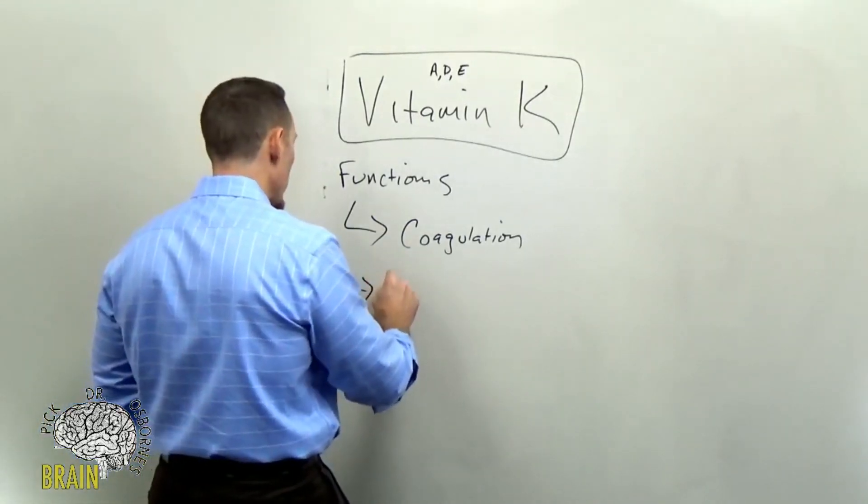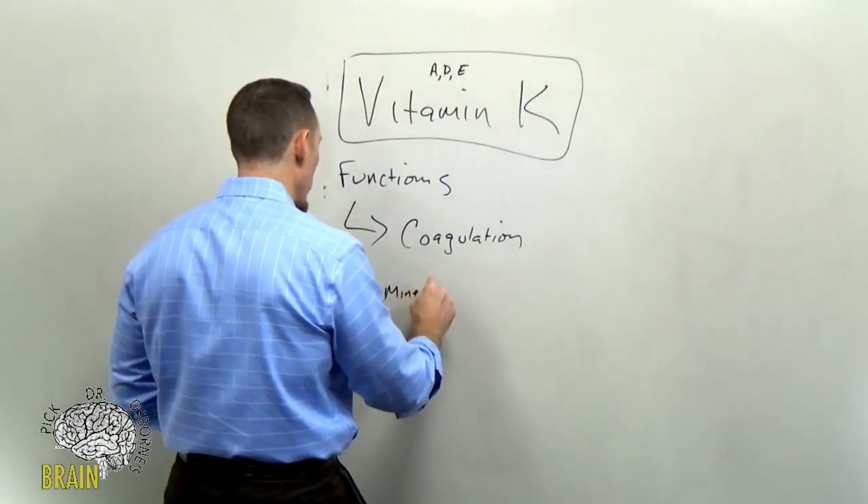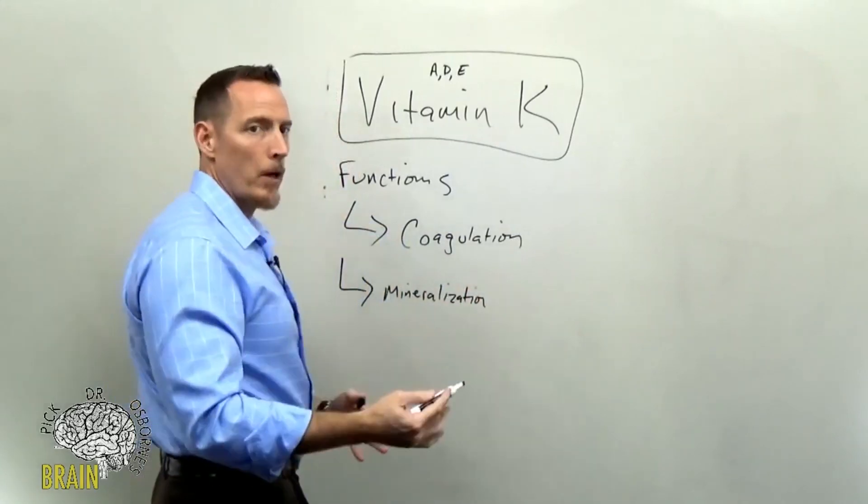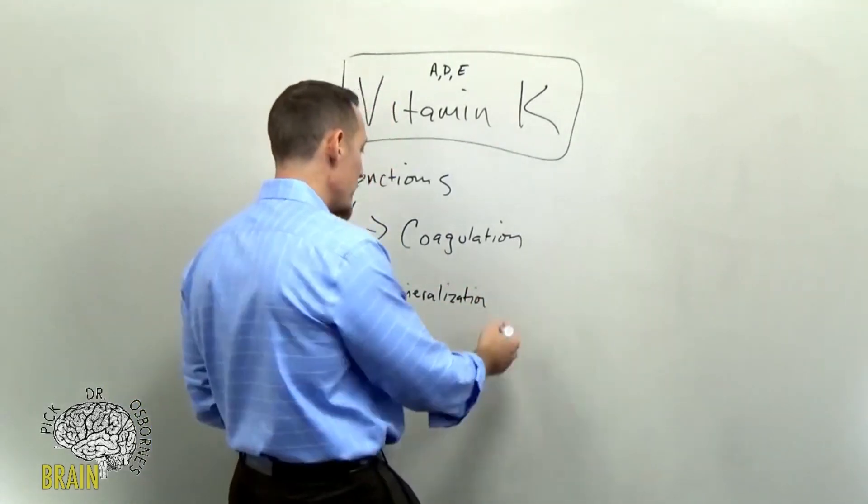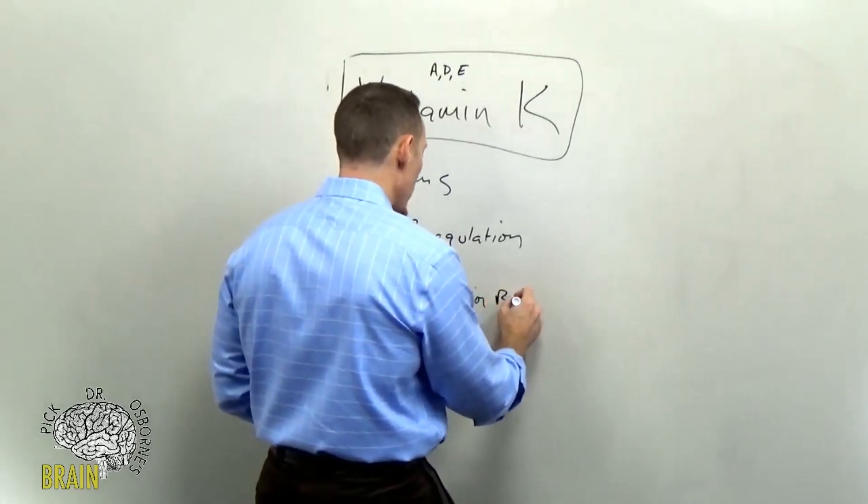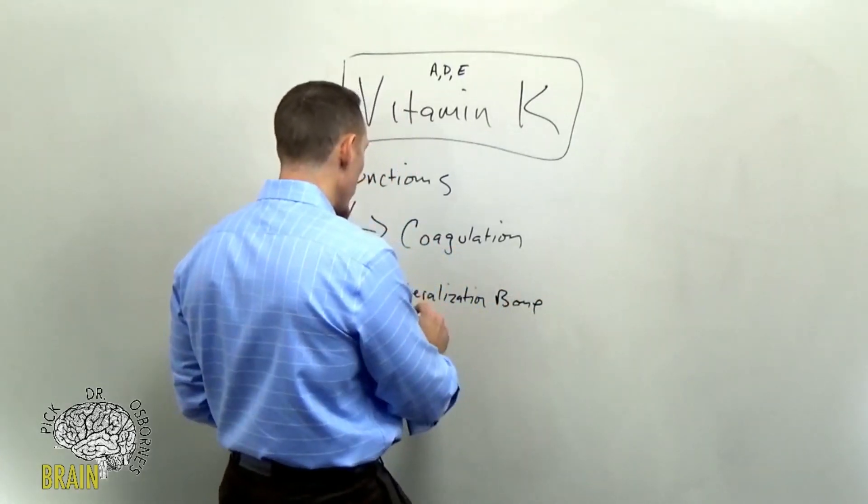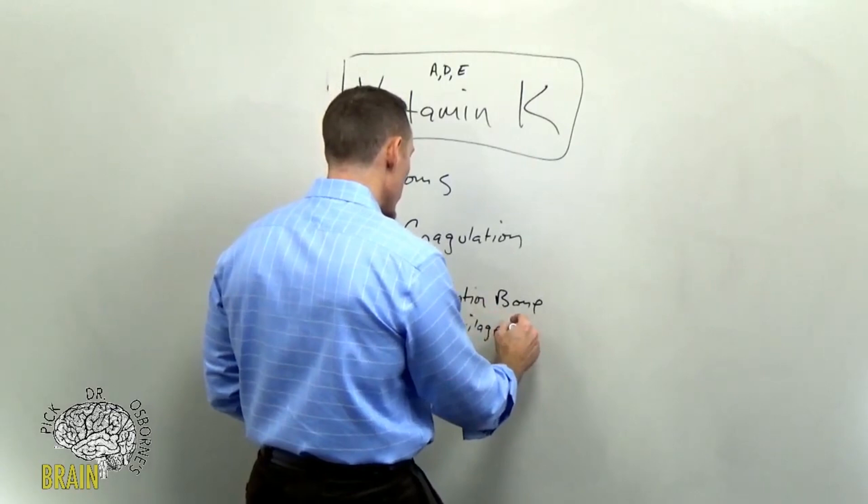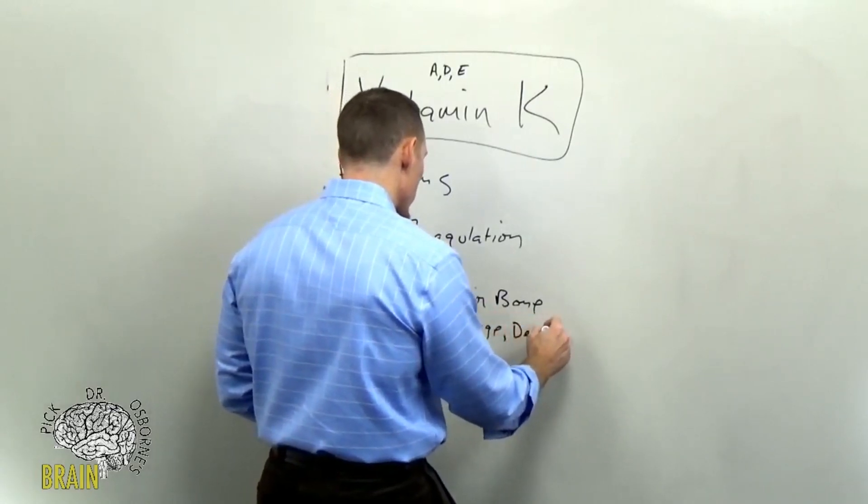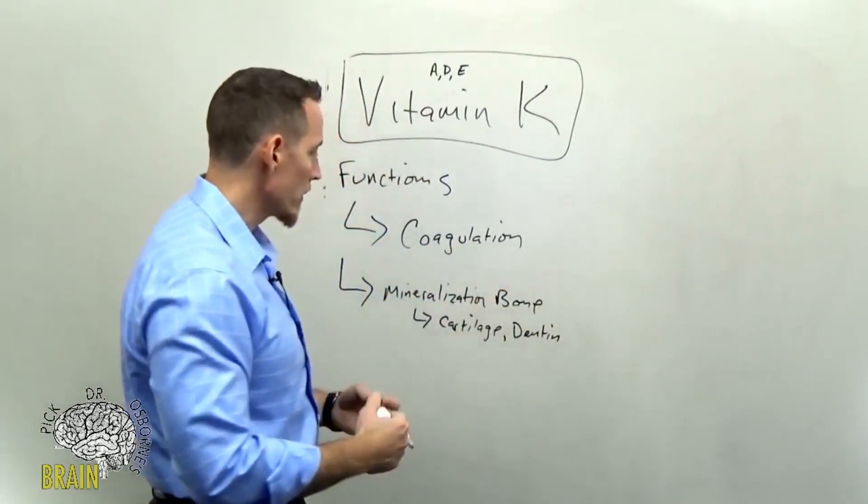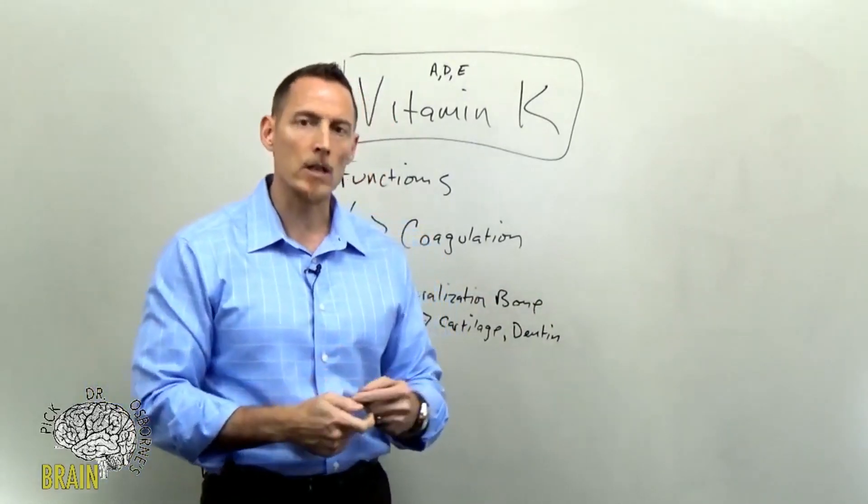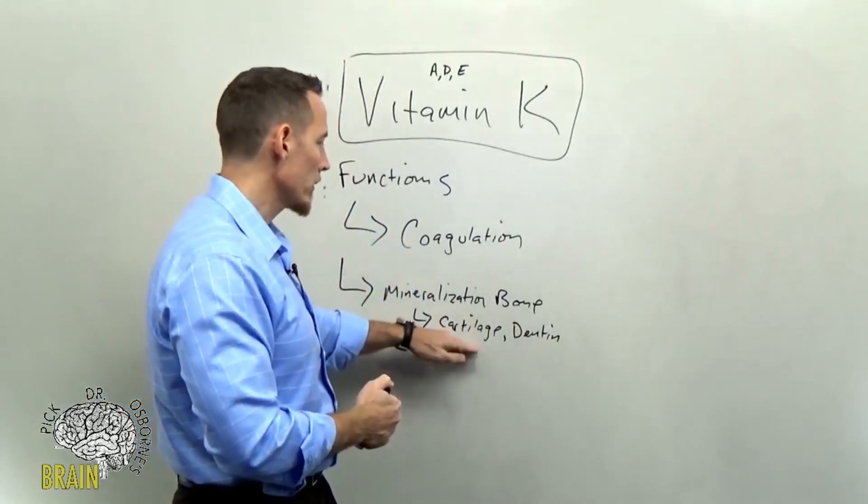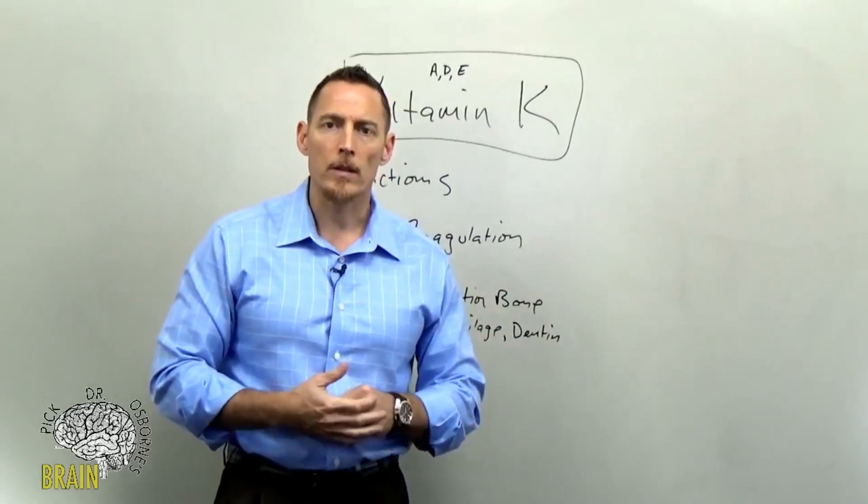Vitamin K is also important in the mineralization of bone. So it helps to put minerals into your bone instead of putting them in other places. So mineralization of bone, it's been shown to actually also help in not just with bone, but also with cartilage and with the dentin in the teeth. So it's important not just for bone. A lot of people talk about vitamin K in the bone and actually in Japan, vitamin K, certain derivatives of vitamin K are actually used and approved as a drug to treat osteoporosis, but also helps with cartilage formation, also helps with dentin production.